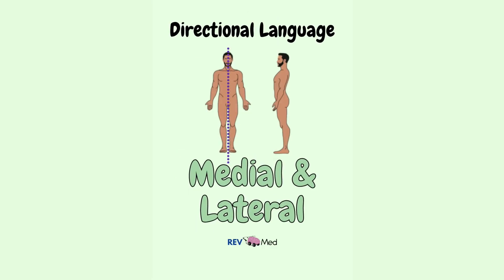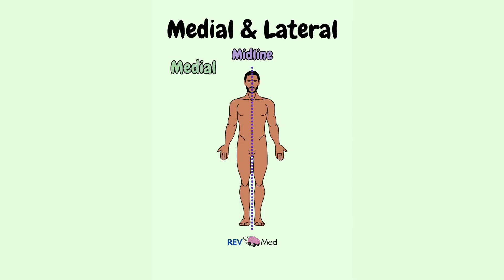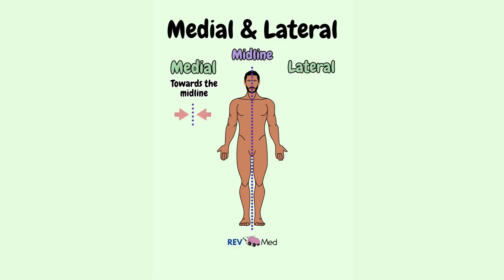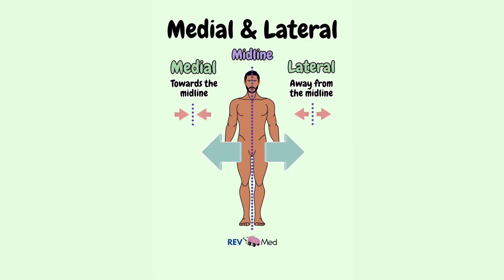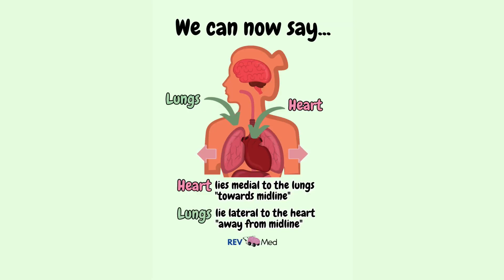Next, we have the terms medial and lateral. To discuss this, we draw an imaginary line down the midline of our body, which divides the body into right and left halves. Medial means towards the midline of the body, and lateral means away from the midline and towards the side of the body. So we can say that the heart lies medial to the lungs, or the lungs lie lateral to the heart.